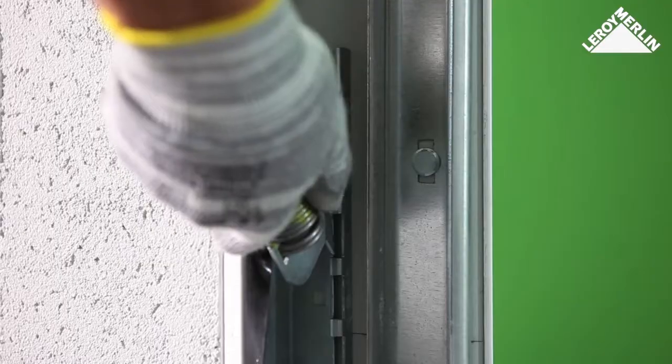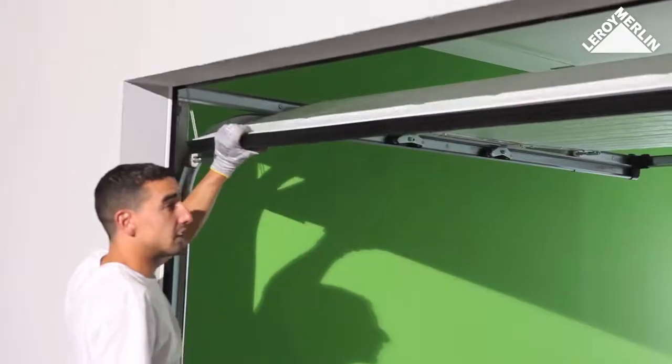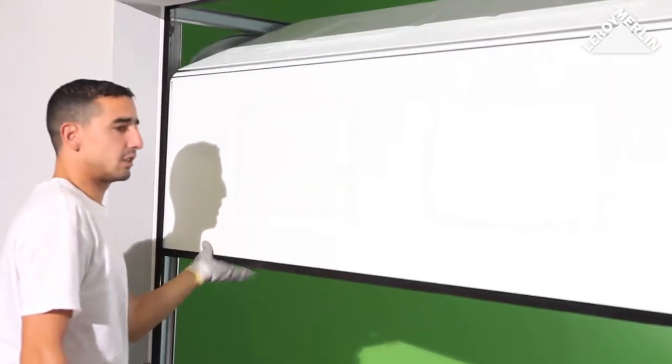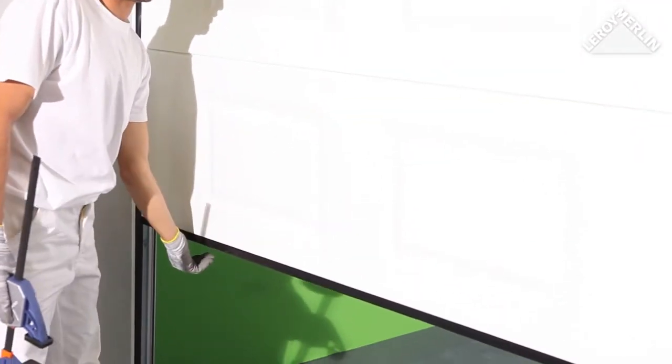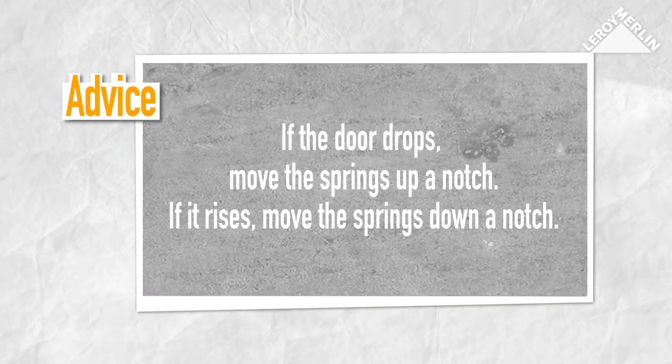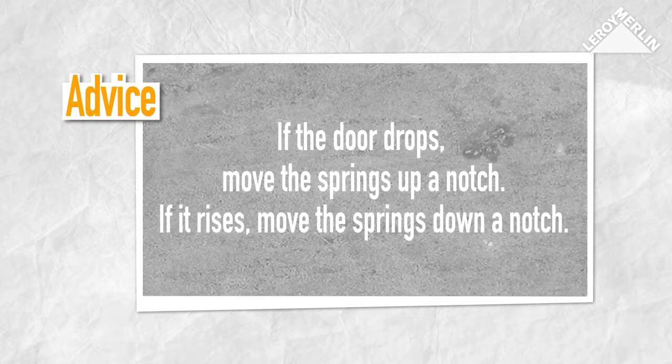Lower the door until it is one meter from the ground. The door should be balanced. If the door drops, move the springs up a notch. If the door rises by itself, move the springs down a notch.